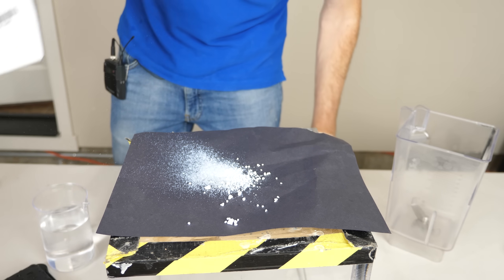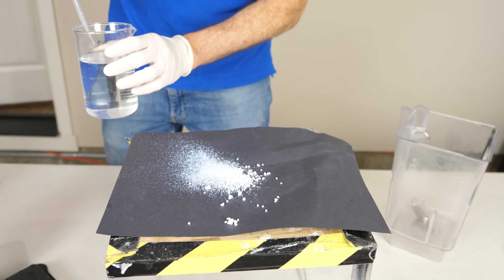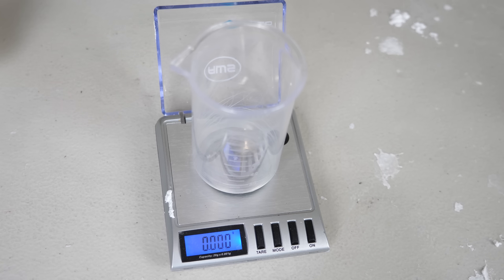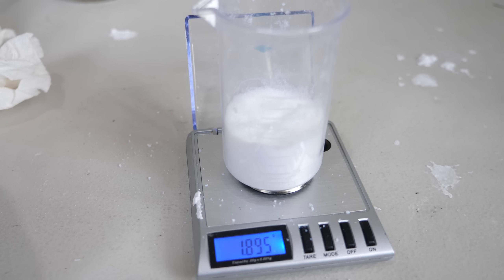So it has an extremely low density, and also they can make it very hydrophobic. Okay, for example, let's see how much 50 milliliters of this weighs. So that's about 1.9 grams per 50 milliliters.